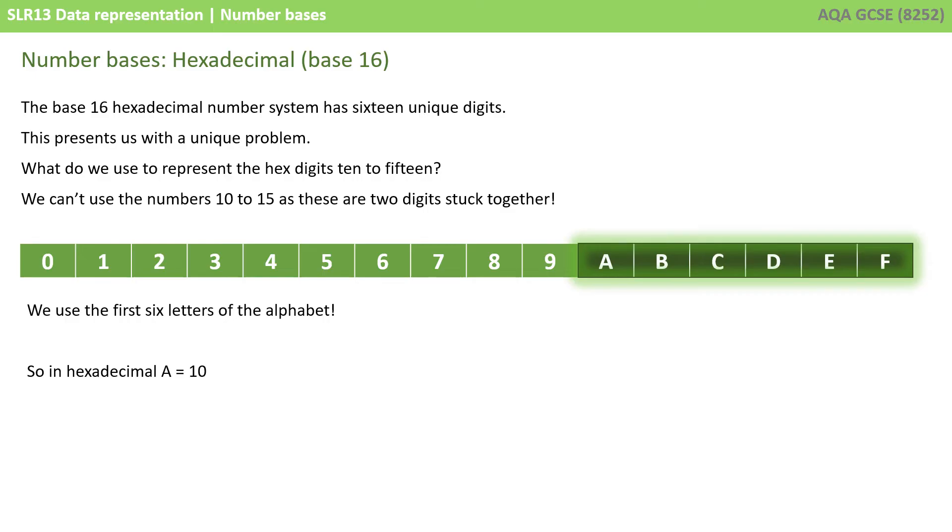We simply choose to replace digits 10 to 15 with the alphabetic letters A through F. So, in hex, we have 16 unique digits representing 0 to 15: 0, 1, 2, 3, 4, 5, 6, 7, 8, and 9, and then A representing 10 from decimal through to F for 15.